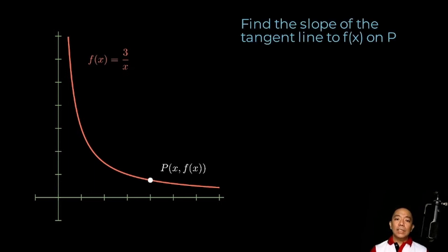To do that, we'll introduce a second point, which we will call point Q. Point Q nasa left siya ni point P at yung distance ng dalawang points horizontally, iseset natin as delta x. This would mean that the coordinates of point Q will be x plus delta x, tas yung y-coordinate niya ay f of x plus delta x.